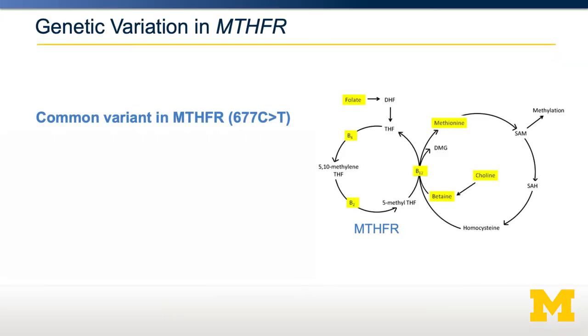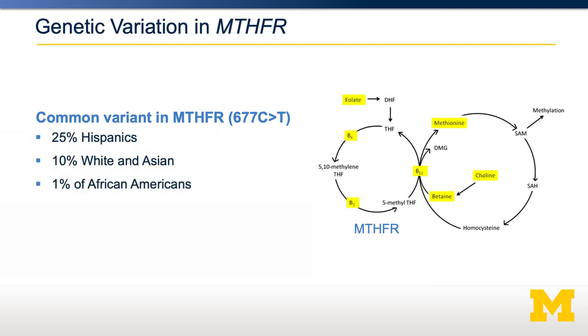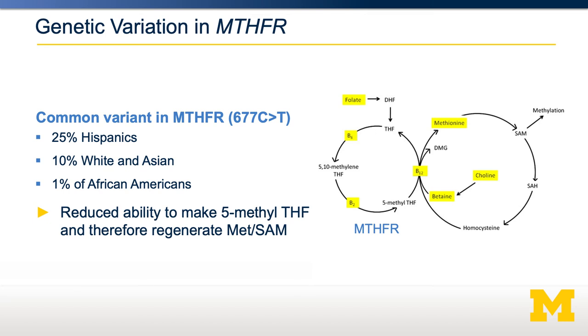Another source of potential folate deficiency is genetic variation. The gene MTHFR, shown here on the bottom, has a common variant that is quite common in Hispanic, white, and Asian populations. This variant reduces the ability for folate to be interconverted into 5-methyl-THF, the precursor for recycling homocysteine into S-adenosylmethionine. Therefore, if you have this loss-of-function variant in MTHFR, you may not have sufficient transfer of folate methyl groups into SAM methyl groups — putting you at high risk of functional folate deficiency from a genetic basis.